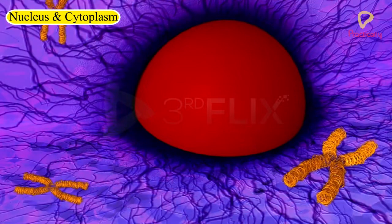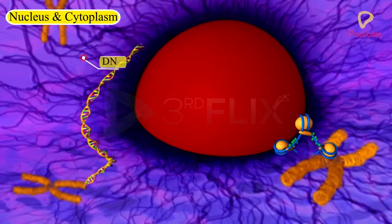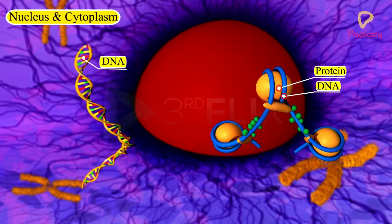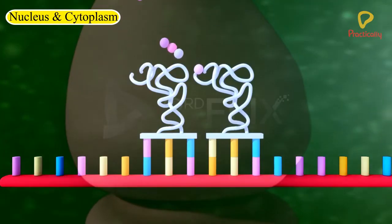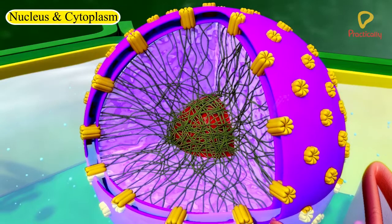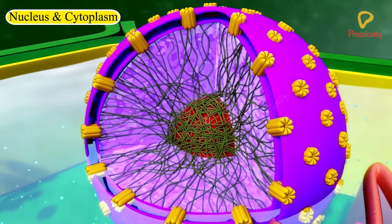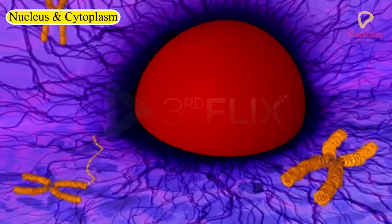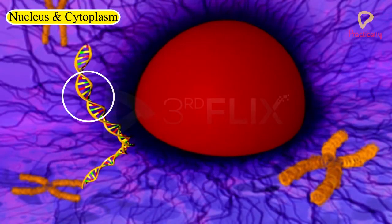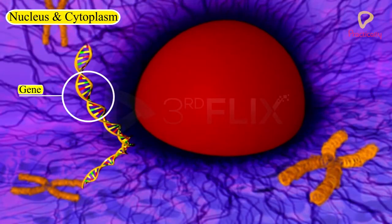Chromosomes are composed of DNA and protein. DNA molecules contain the information necessary for constructing and organising cells. Functional segments of DNA are called genes.